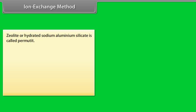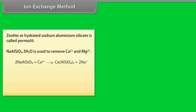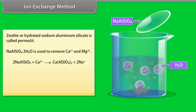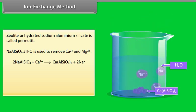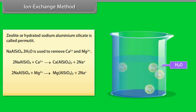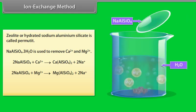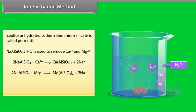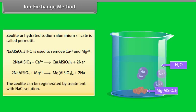Ion exchange method: Zeolite or hydrated sodium aluminum silicate is called permutate. NaAlSiO4·3H2O is used to remove Ca2+ and Mg2+. The zeolite can be regenerated by treatment with NaCl solution.